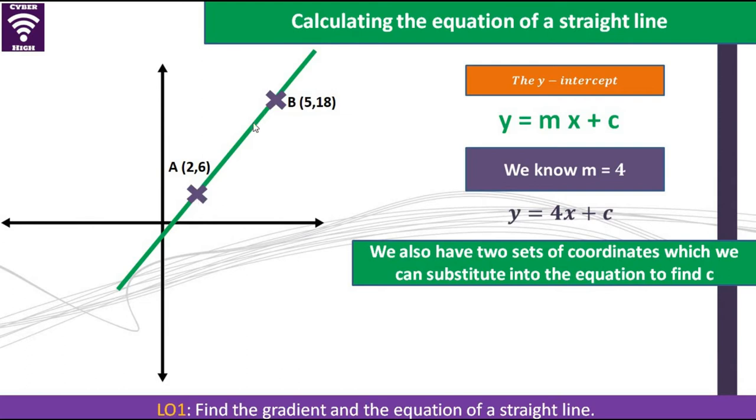Remember, it is any of the points. It doesn't really matter. But in this case, we are going to use point A. So we'll put 6. Always coordinates are placed in the form of x, y. So 6 represents y is equal to 4 times 2, and then that is plus c.